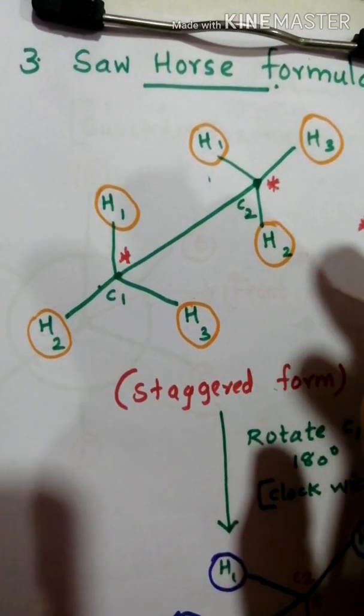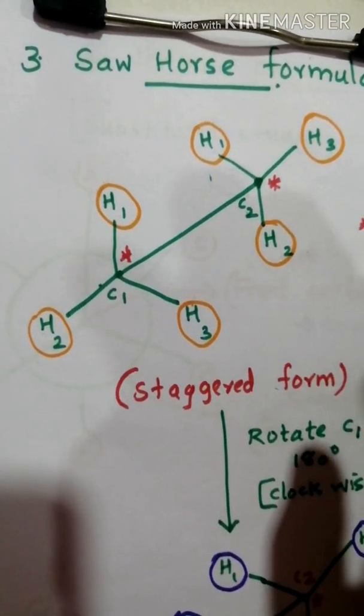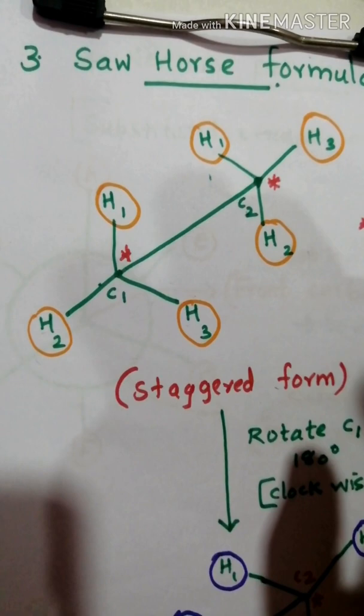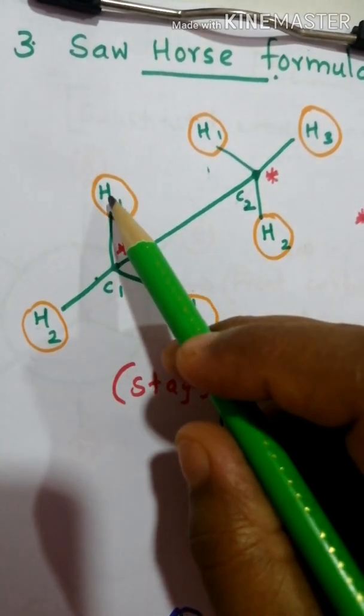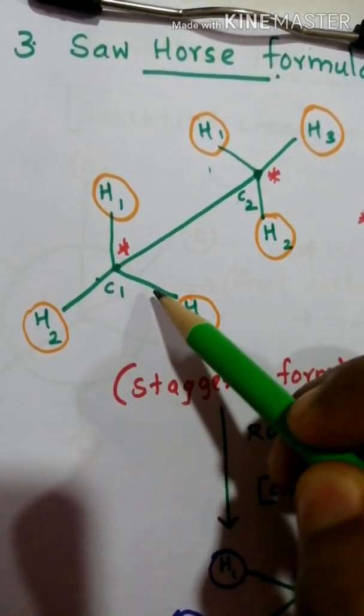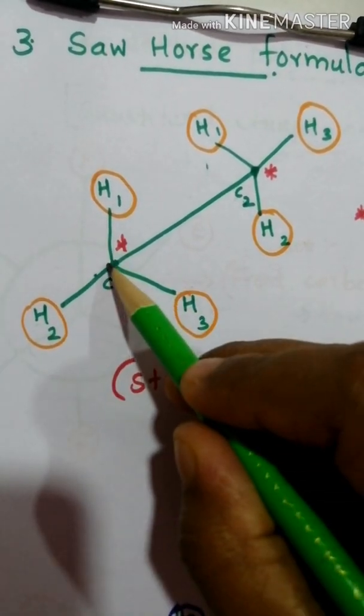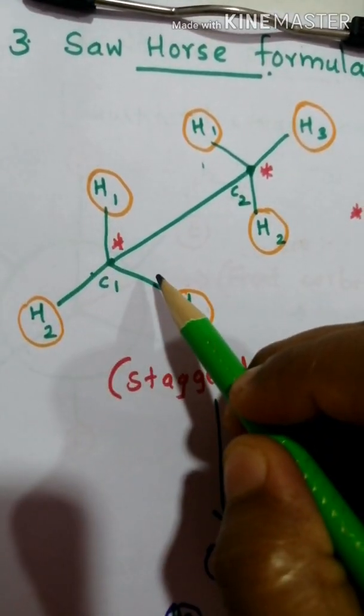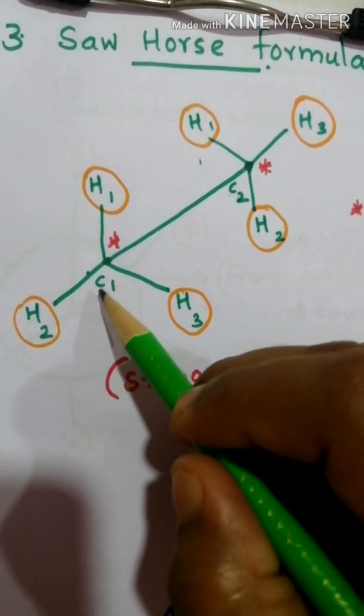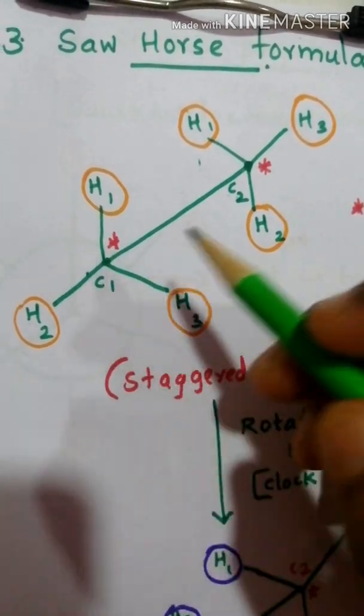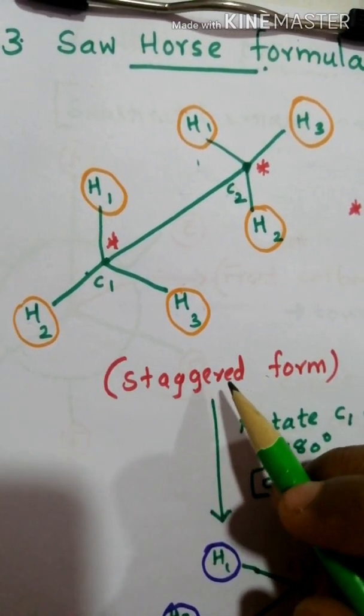That's why we're getting two asymmetric centers, two chiral carbons C1 and C2. The star represents the asymmetric center. H1, H2, H3 - there are four different groups. All four are different substitutions, that's why we're getting asymmetric centers. This is the staggered form of Sawhorse.